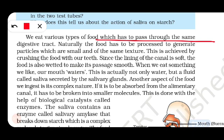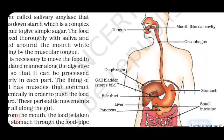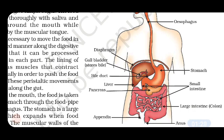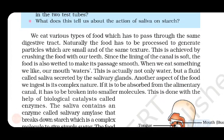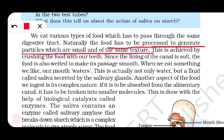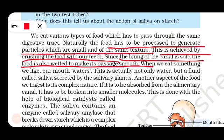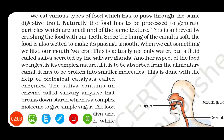It is the same digestive tract. The digestive tract is: the mouth, the stomach, the small intestine, the large intestine, and then the end. This process follows the food. Food has to be processed to generate particles which are small and of the same texture. We crush the food from the teeth. The lining of the canal is soft, so the food is also wetted to make its passage smooth.